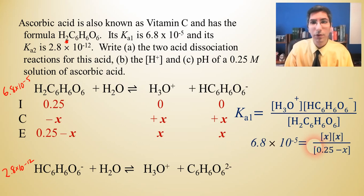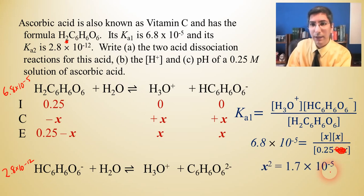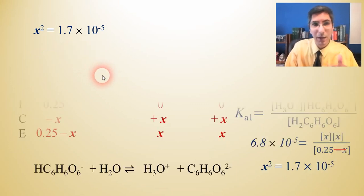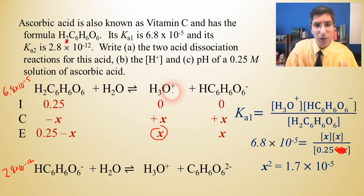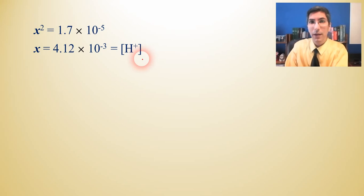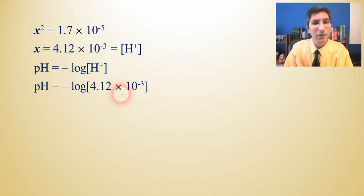So we plug those numbers in. So our Ka1 was 6.8 times 10 to the negative 5th. That's equal to X times X over 0.25-X. Now we're going to try to ignore the -X right here, since it's probably going to be very small. We have a very small Ka value. So I'm going to take that out. Now we can cross multiply. And I can take the square root. So X is equal to 4.12 times 10 to the minus 3rd. Now, as you might notice here, let me back up a little bit here. X is the same as our H+, our H3O+, isn't it? So that means that that is the H+ concentration here in this. Now to find pH, we just have to take the negative log of that number. So we're going to take negative log of 4.12 times 10 to the minus 3rd. And we get 2.38 as our pH. So that's the answer.